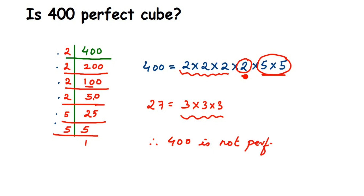This is how you can check any other number to see if it's a perfect cube. All the factors should form sets of 3 — if any single factor is left out, it is not a perfect cube. I hope this is clear. If you have any other question from this chapter or any other chapter, you can drop a comment. Thank you so much for watching.